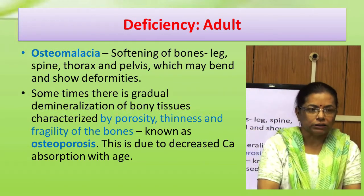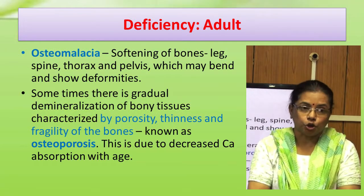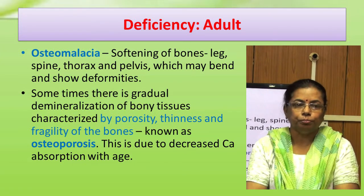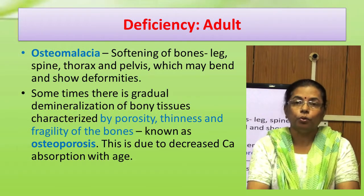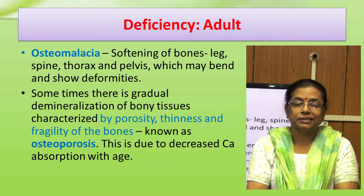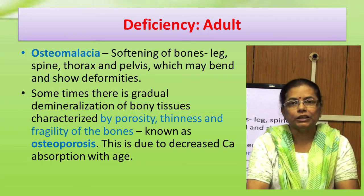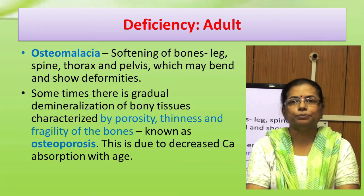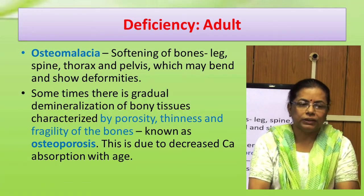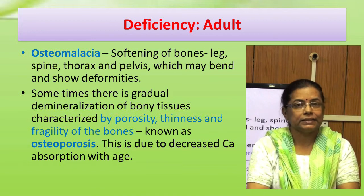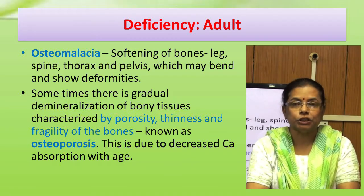Deficiency of calcium in adults causes osteomalacia, which is a rickets-like condition. The bones become soft and unable to bear the weight of the body and may bend or break. In osteomalacia, the composition of bone is altered; the levels of calcium and phosphorus are reduced very low and the bone becomes translucent. Sometimes there is gradual demineralization of bony tissue characterized by porosity, thinness, and fragility of the bones, known as osteoporosis. Osteoporosis is due to decreased calcium absorption with age, and while the chemical composition remains the same, there is a decrease in bone density.